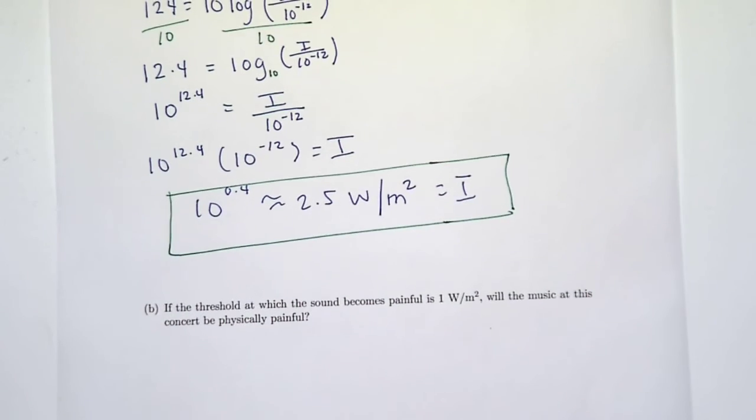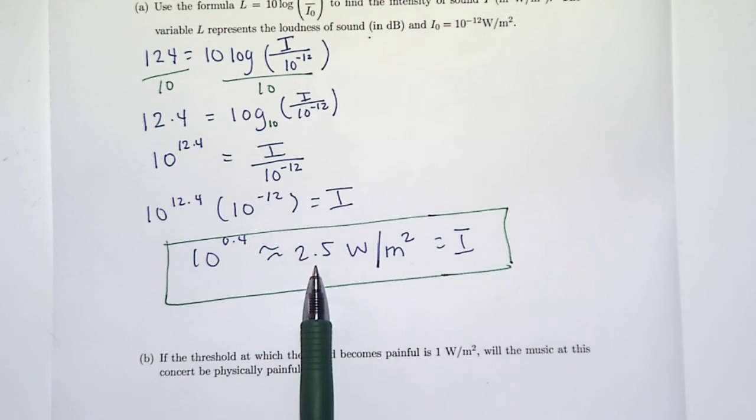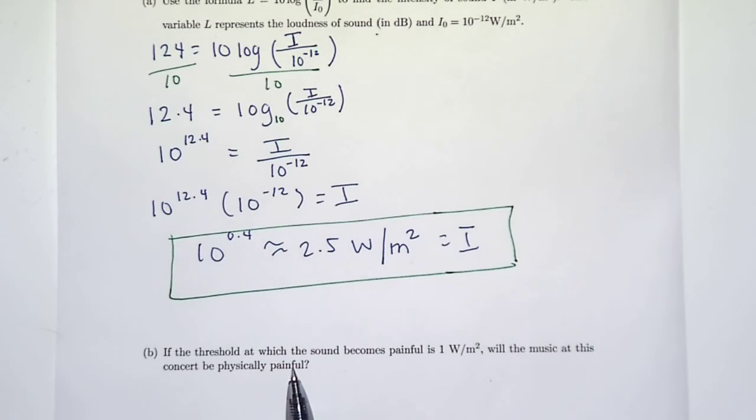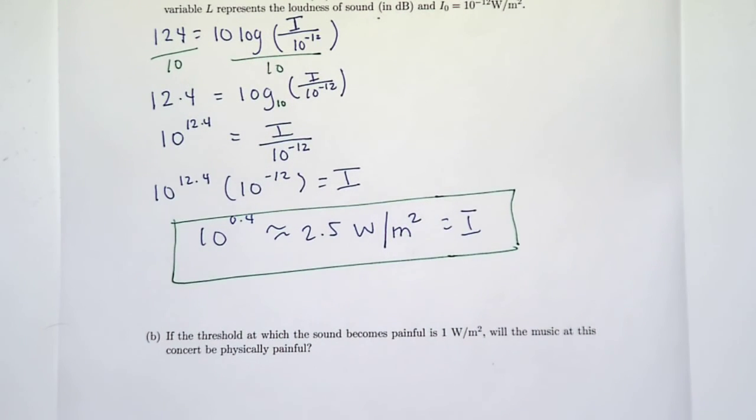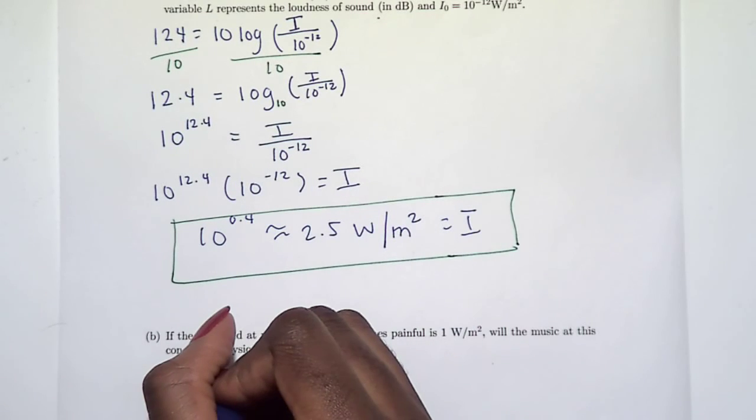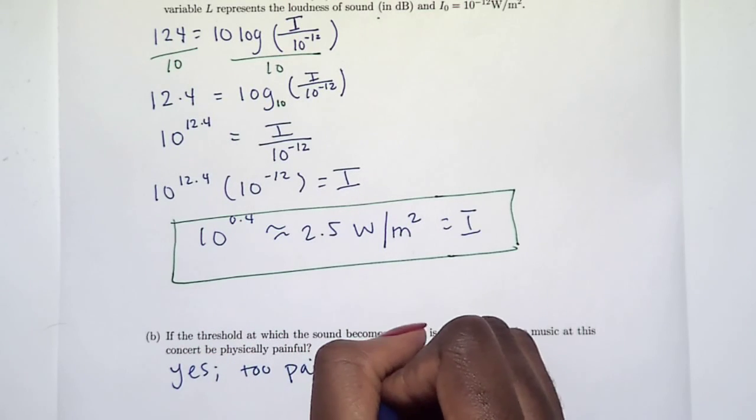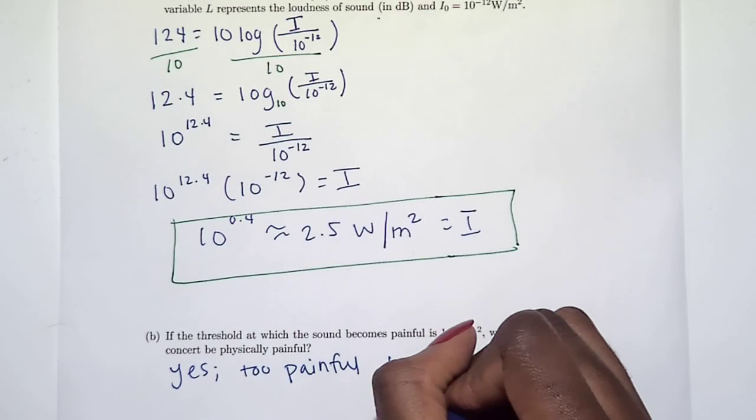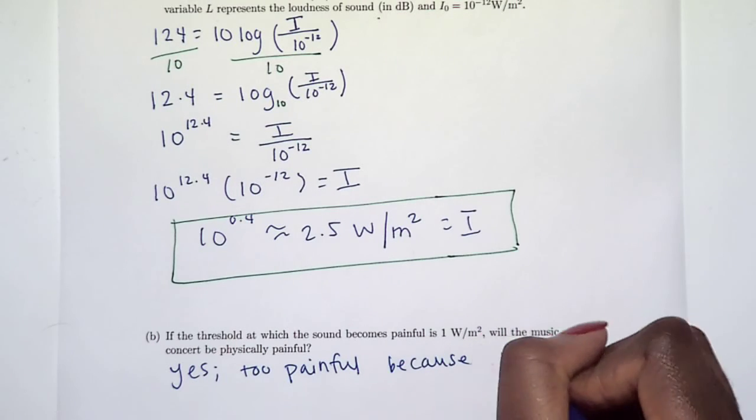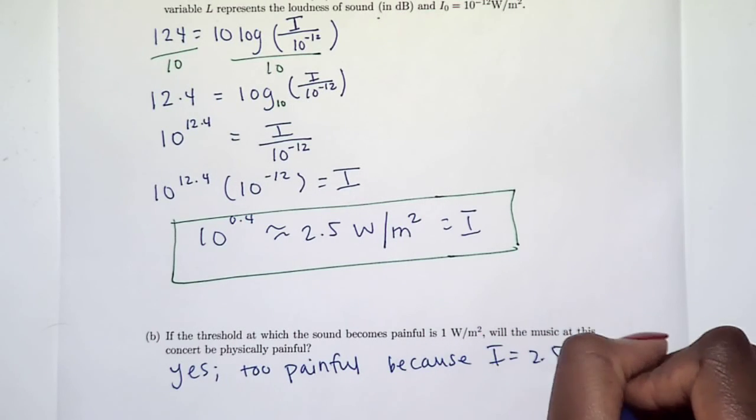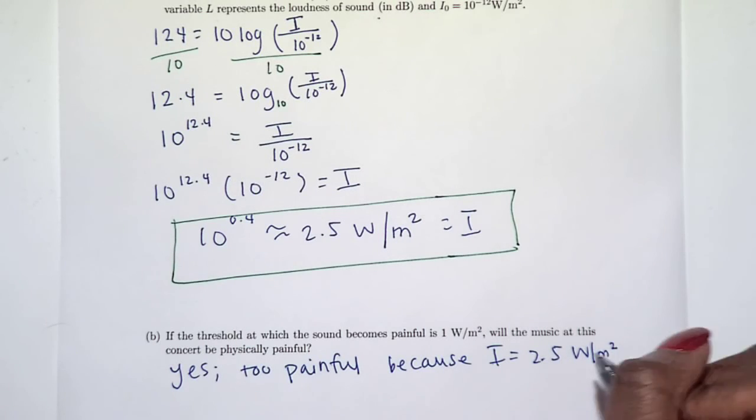Well, what did we find? We found the threshold here, 2.5. And it says, If it becomes painful at 1, but ours is 2.5, will the concert be physically hurtful? Yes. Ours is way higher than that. Yes. Too painful because I is 2.5, way more than the threshold for pain.